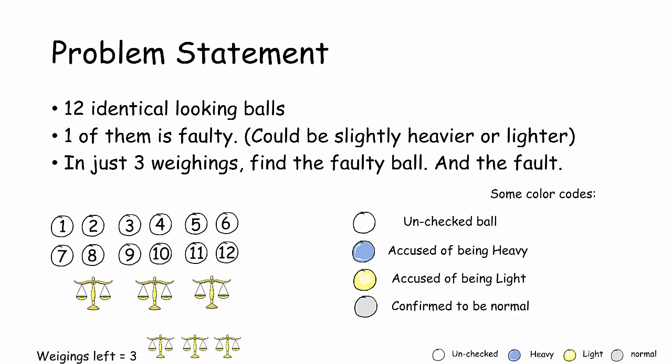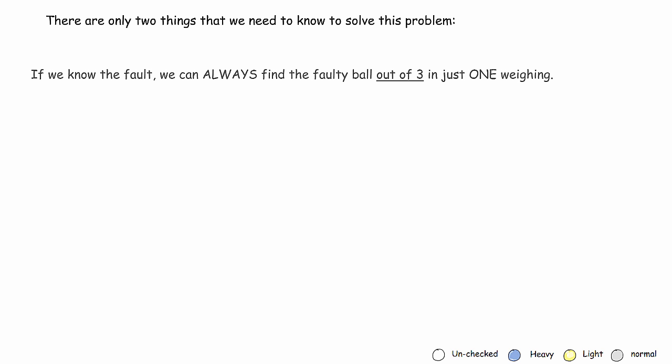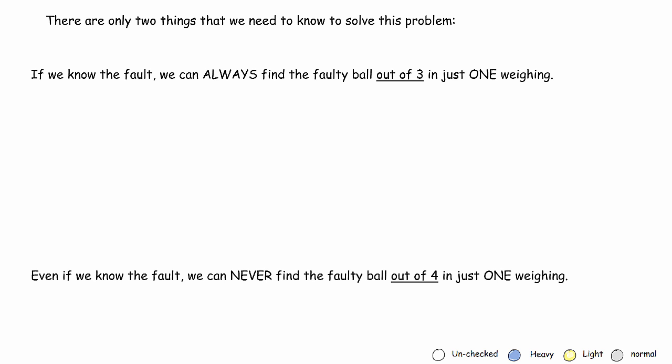There are only two things we need to know to solve the problem. If we know the fault, we can always find the faulty ball out of three in just one weighing. And even if we know the fault, we can never find the faulty ball out of four in just one weighing. Suppose we have three balls — nine, ten, and eleven — and we know that one of them is light.